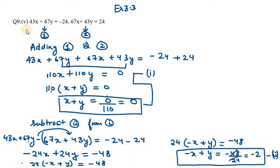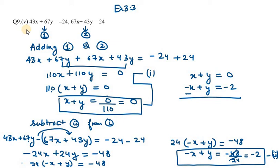Now we have equation 1: x plus y equals 0, and equation 2: minus x plus y equals minus 2. Using the elimination method, subtracting these two equations reduces the y terms. We get x plus x equals 2x, and on the right hand side we get 2. So 2x equals 2, which means x equals 1.